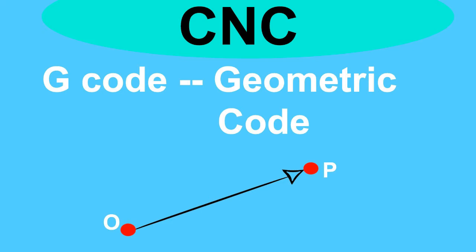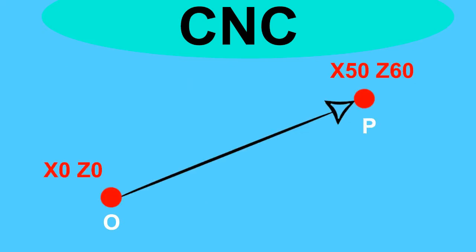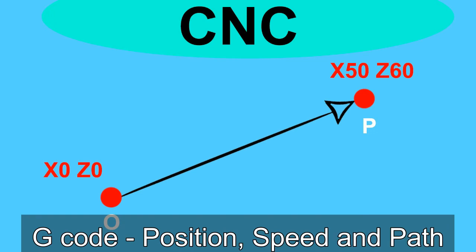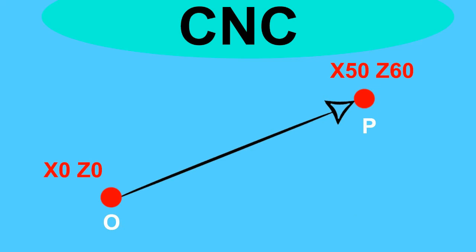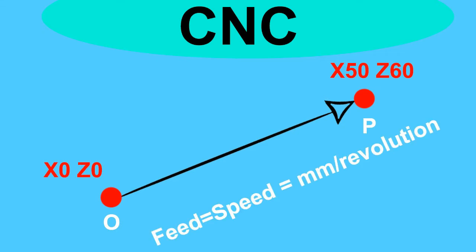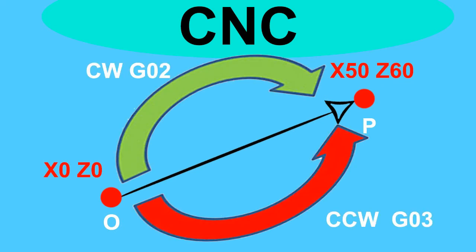In this part of the video we will focus on G-code. G-code's full form is Geometric Code, and it tells the machine where to move, how fast to move, and what path to follow. For example, if my tool is at point O (X0, Z0) and I want to move to point P, I will write X50 Z60. It also tells what path to follow — whether in a straight line or a curved path.